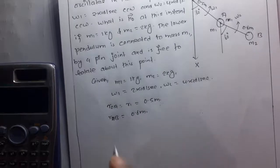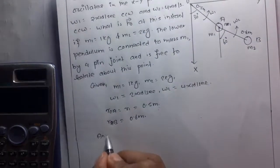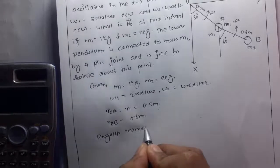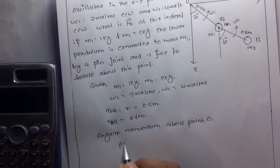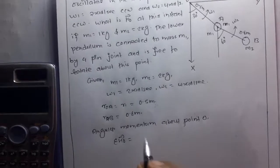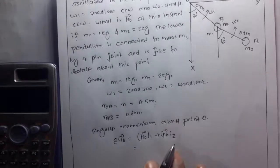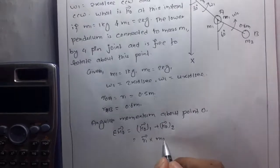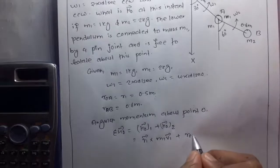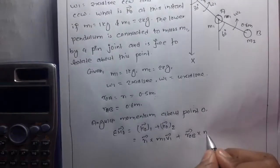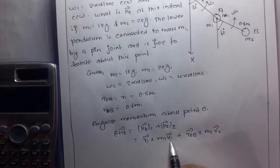We need to find the angular momentum about point O. The total angular momentum H₀ is given by the summation: H₀ = H₀₁ + H₀₂, where H₀₁ = r1 cross m1·v1 and H₀₂ = r_OB cross m2·v2. We need to find r1, v1, r_OB, and v2.